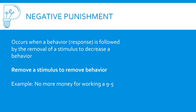Negative punishment occurs when a behavior is followed by the removal of a stimulus to decrease that behavior. Remember, punishment is about decreasing behavior. So removing a stimulus to remove a behavior — for example, if you remove the money from a job, people will also remove the behavior: they'll stop going to work.